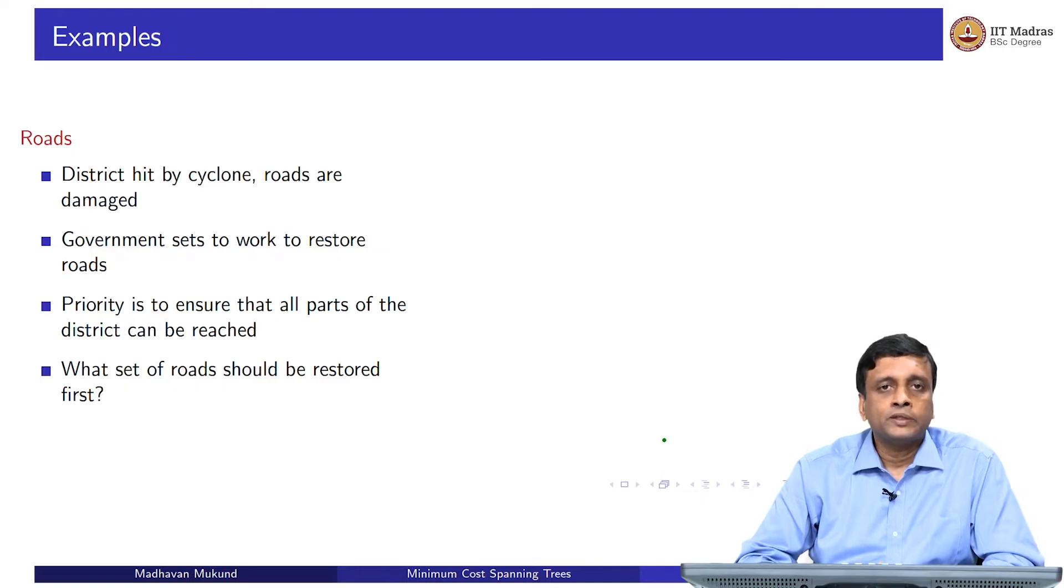You want to make sure that the roads that are restored connect all the vertices. You could have some roads which are not restored, but you want to choose roads to restore which make sure that after you have restored these roads, every town in that district is reachable from every other town. Which set of roads should you restore first?